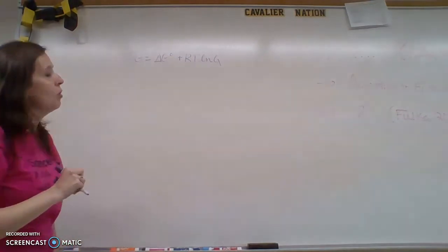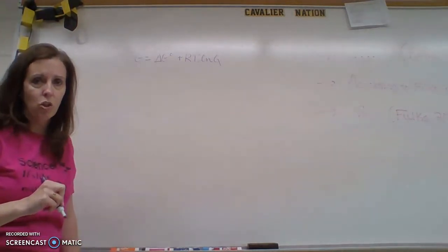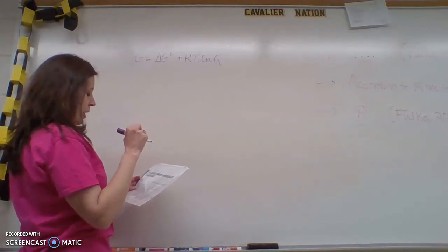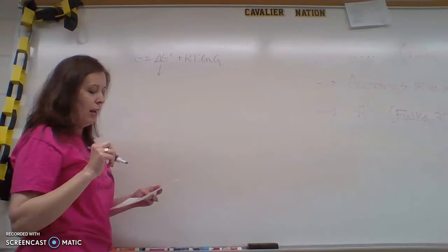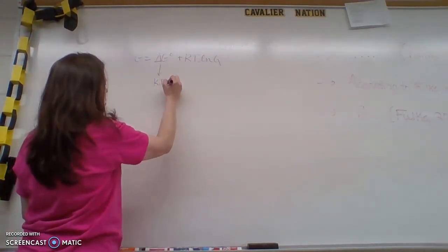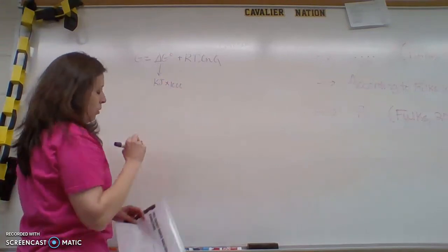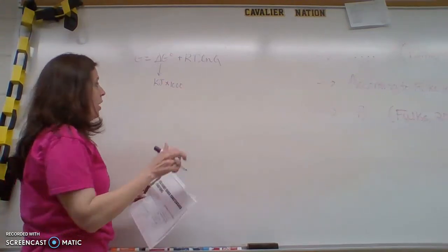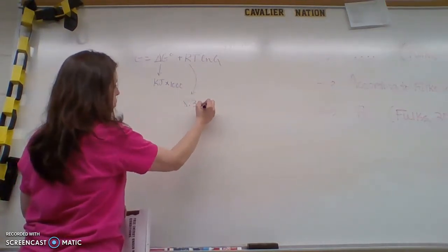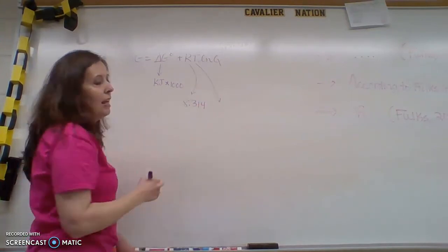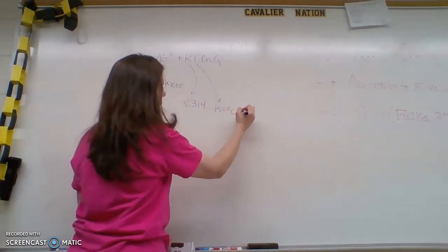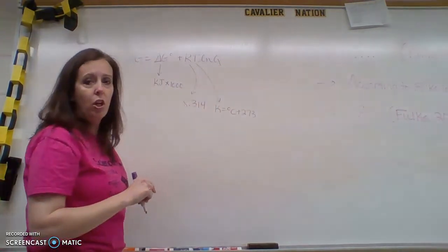This is the equation we're going to use in that situation. This delta G value is going to be given to you in the problem. The only thing you're going to have to remember is it's probably going to be in kilojoules. So if it's in kilojoules, we're going to multiply it by 1,000. R, we've seen R before. R is 8.314. T is temperature. Temperature is going to be in Kelvin. If I give you degrees Celsius, add 273. Natural log of Q.